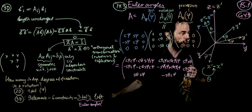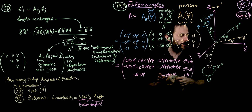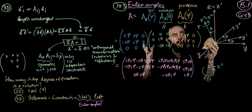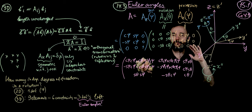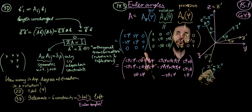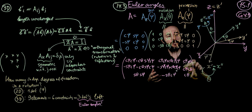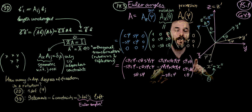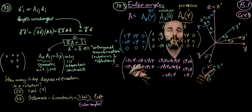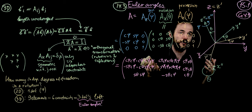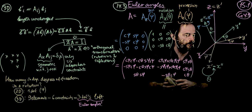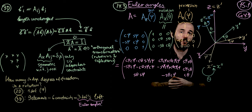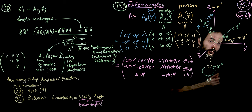You can read more on this in Goldstein, Chapter 4.9. What we're going to do now is figure out how to rewrite the angular velocity vector omega in terms of the different coordinates. We have performed three rotations and thus have four different coordinate systems: x, x-prime, x-double-prime, and x-triple-prime. We will explore this in section 15.2.